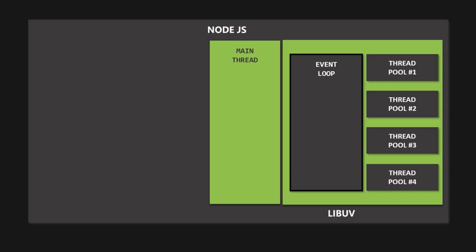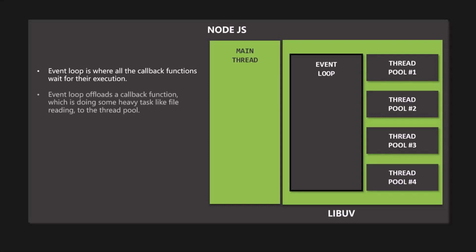All the asynchronous tasks like file reading, timers, etc. are executed inside the threads of the thread pool. The event loop is where all the callback functions wait for their execution. When the main thread is empty, the event loop pushes callback functions from the callback queue into the main thread for their execution. If the callback function is going to do some heavy tasks like file reading or compression, that callback function will be offloaded to the thread in the thread pool.